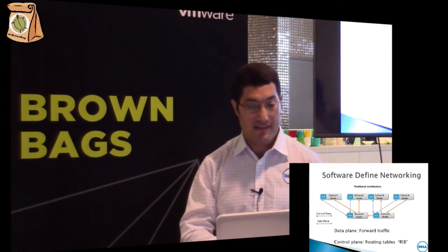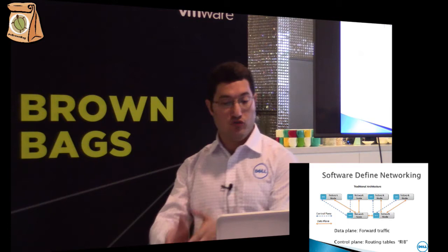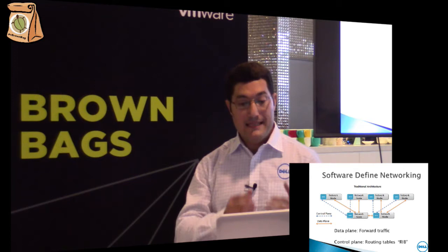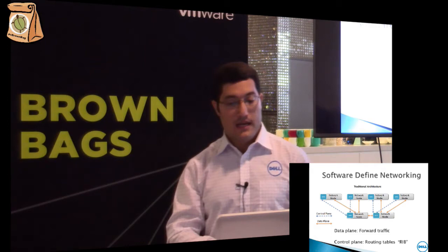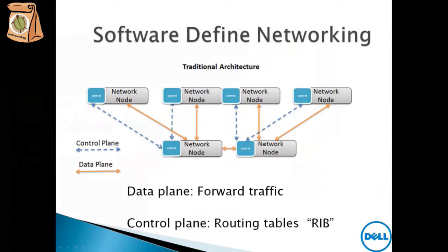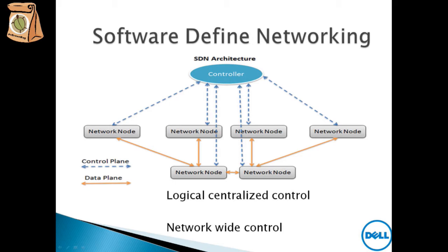From the management point of view, if we have 100 devices, we will have 100 control planes, 100 data planes, and 100 management interfaces. The control plane is the local brain and runs in software, and the data plane is in charge of forwarding packets from one device to another. In a traditional network, you cannot modify the control plane.